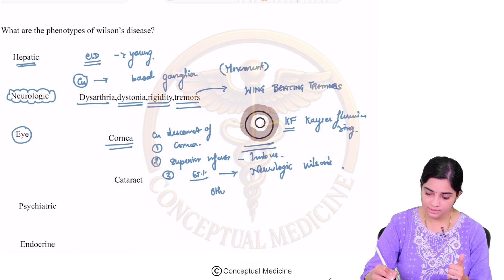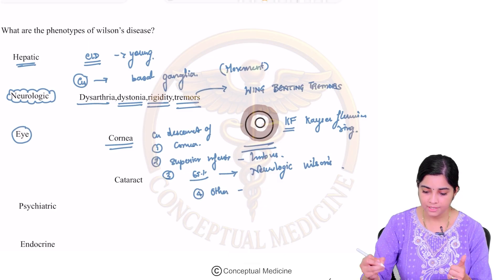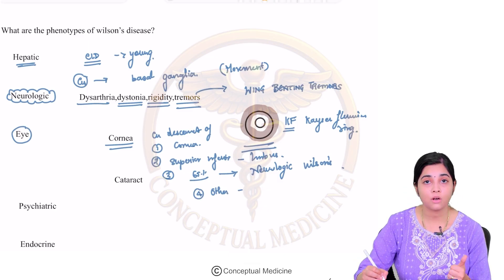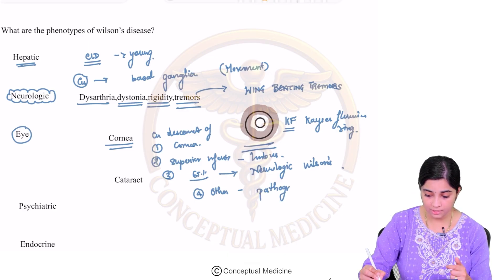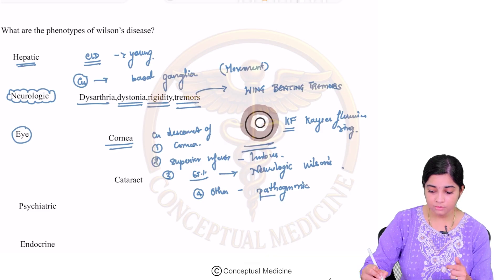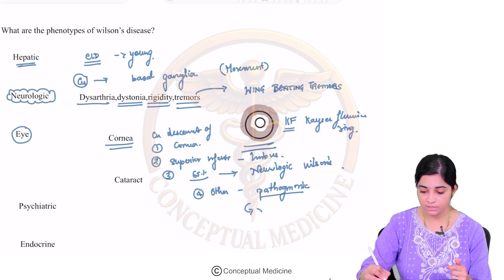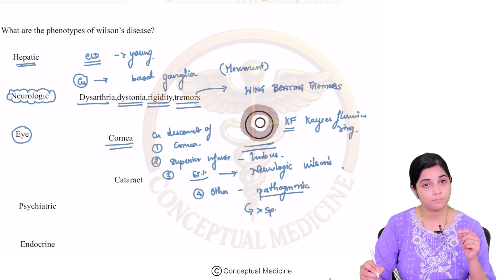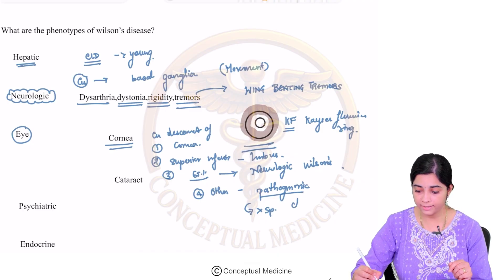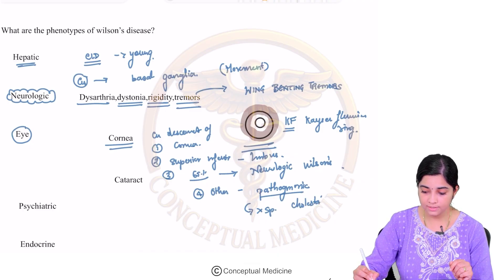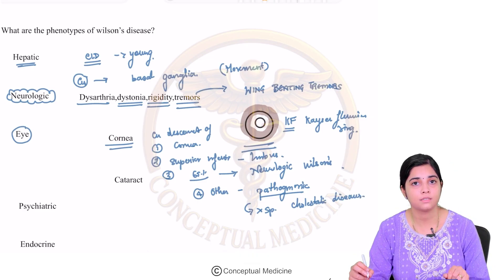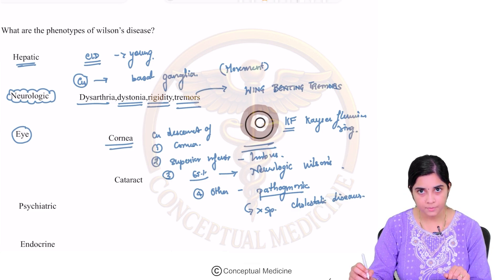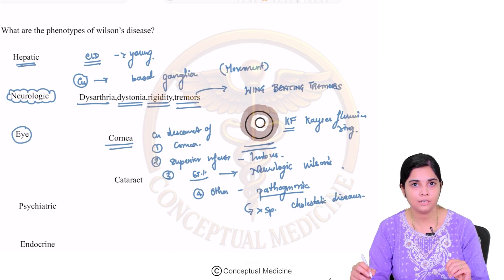What are the other situations where a KF ring can be found? The KF ring is not specific for Wilson's disease, though it is pathognomonic. If the KF ring is found, we do think of Wilson's disease, but it is not specific — it can be found in other cholestatic diseases as well.